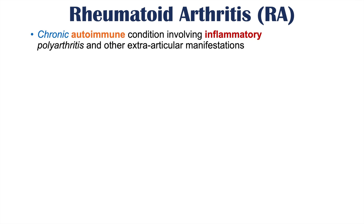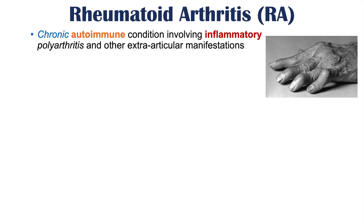Rheumatoid arthritis is a chronic autoimmune condition involving inflammatory polyarthritis and other extraarticular manifestations. We're going to talk about what I mean by inflammatory polyarthritis in the next slide, and we're also going to talk about those extraarticular manifestations later on in this lesson.